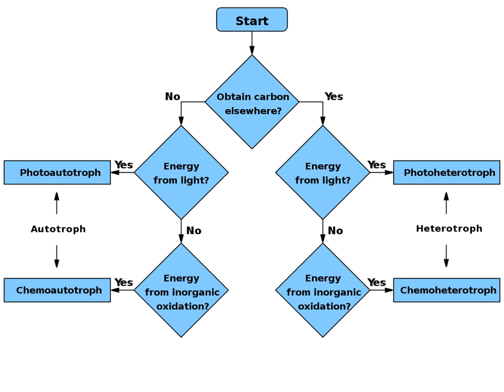Unlike in photoheterotrophs, the electrons flow only in a cyclic pathway. Electrons released from the reaction center flow through the ETS and return to the reaction center. They are not utilized to reduce any organic compounds.